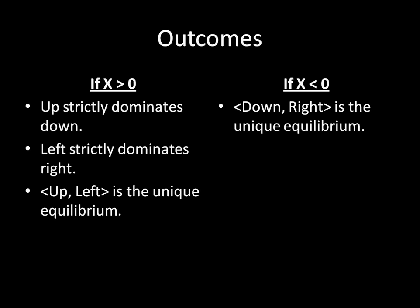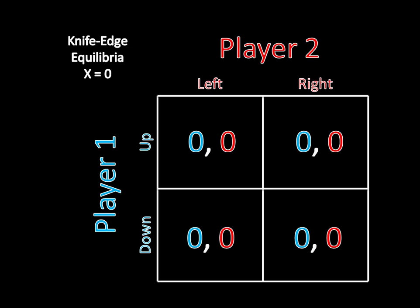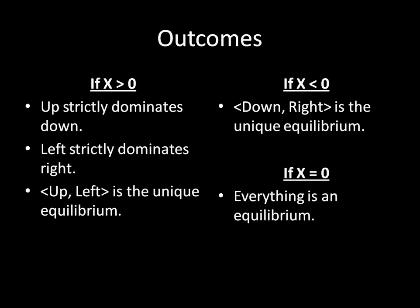All right, so we have x is greater than 0 here. We know what happens when x is less than 0. That leaves one question to be answered. What happens when x is equal to 0? Well, when x is equal to 0, the game becomes really trivial. It doesn't matter what the players do. It doesn't matter what player 1 does. It doesn't matter what player 2 does. Player 1 is always going to get 0. Player 2 is always going to get 0. They can't change anything and not get 0. So 0 is the outcome for both of these players.